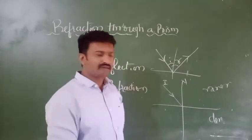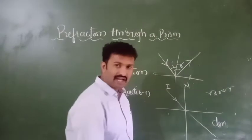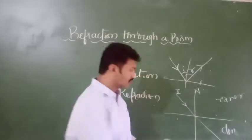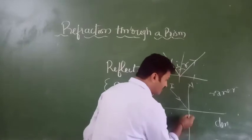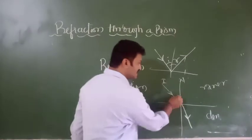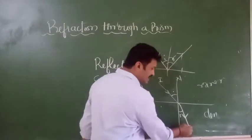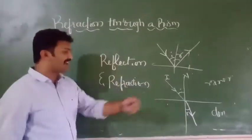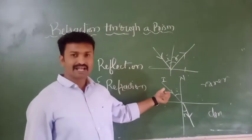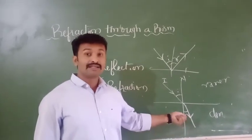If another medium is not present, the ray of light travels along a straight path. But when a denser medium is in between, the ray of light travels towards the normal. This is the angle of incidence, and this is the angle of refraction, and this is the refracted ray.